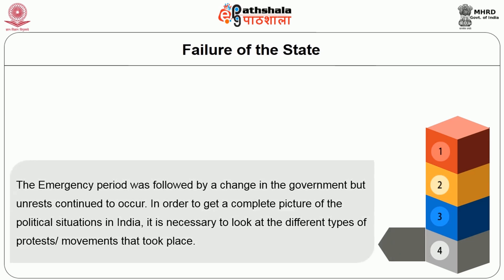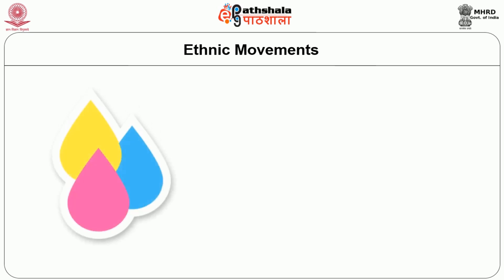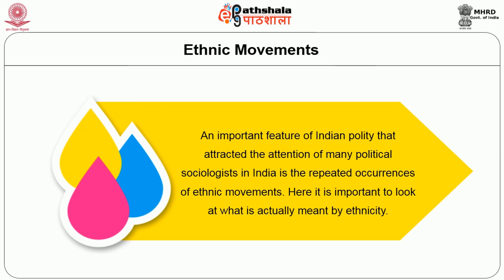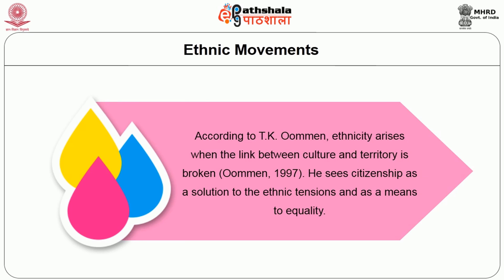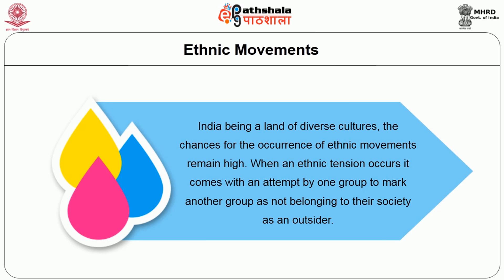The emergency period was followed by a change in government but unrest continued to occur. In order to get a complete picture of the political situation in India it is necessary to look at the different types of protest movements that took place. Ethnic movements. An important feature of the Indian polity that attracted the attention of political scientists in India is the repeated occurrence of ethnic movements. According to TK Oommen, ethnicity arises when the link between culture and territory is broken. He sees citizenship as a solution to ethnic tensions and as a means to equality. India, being a land of diverse cultures, maintains a high chance for the occurrence of ethnic movements.